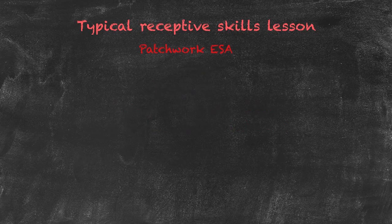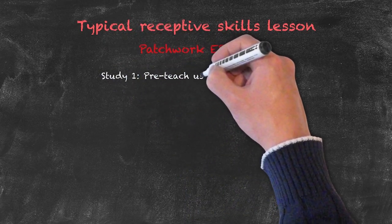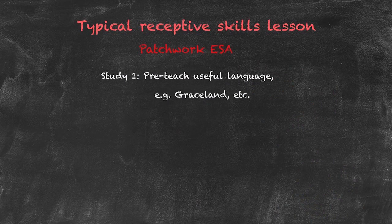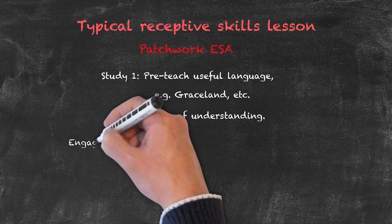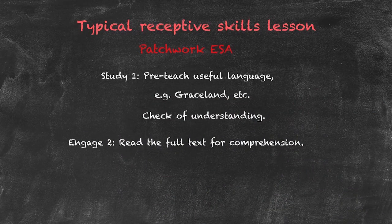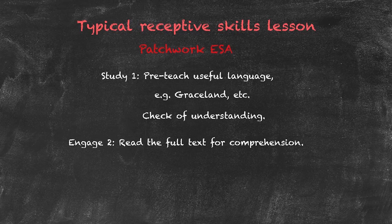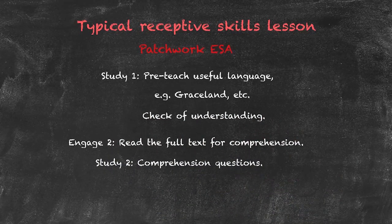From that point, we move on to our first study activity. In this phase, it would be useful to pre-teach some language, including names such as Graceland as it relates to Elvis Presley. Do some pre-teaching of vocabulary and then check understanding. Once we're sure from that study phase that they understand the vocabulary required, we move on to our next engage activity, asking them to read the first text from the engage phase, but this time reading it for comprehension. Before starting this activity, it's very important to do a demonstration and elicit a correct answer before giving out the material. Once they've completed the reading for comprehension, we go on to a study activity asking a series of comprehension questions, typically using a worksheet — again, demonstrating purpose, eliciting correct answers, then giving out the material.